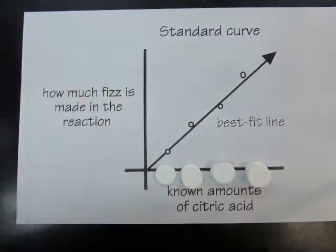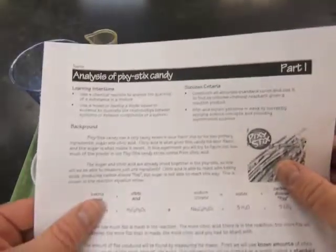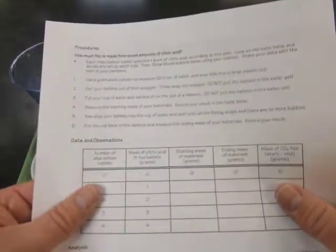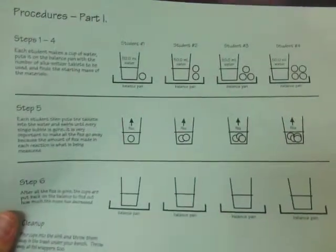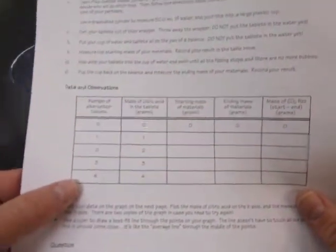So let me show you the procedures. On the back of today's assignment are the procedures listed, and you'll also find at your lab bench a diagram that shows those steps. What each person in your group can do is choose how many Alka-Seltzer tablets you're going to work with, working in a group of four students. Each student can choose one, two, three, or four tablets to use.